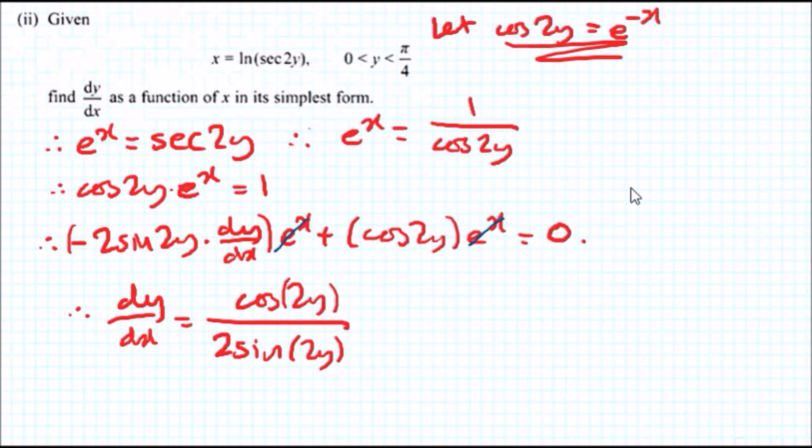Now, do you remember earlier when I said let cos 2y equal e^(-x)? Well, this is going to be useful. So now we can finally find what sine 2y is in terms of x and cos 2y because we know what cos 2y is.